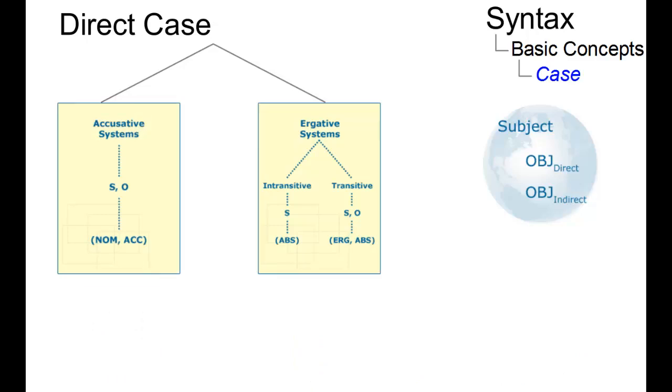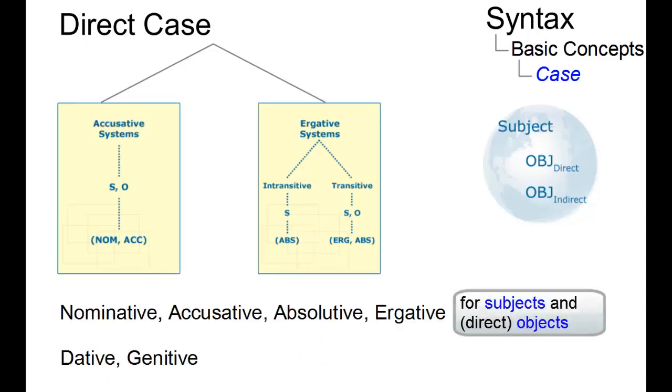Cross-linguistically, there are six direct cases. The nominative, the accusative, the absolutive, and the ergative case for subjects and direct objects, and the dative and the genitive case for indirect objects.